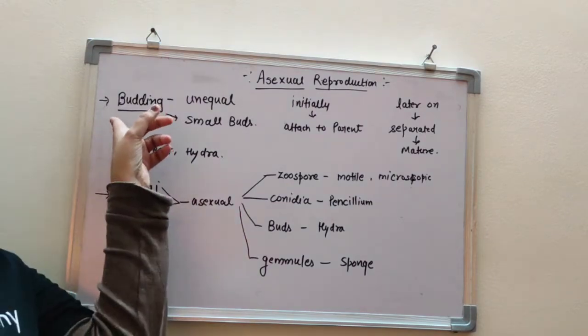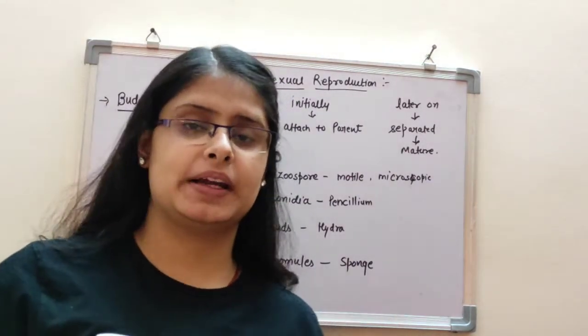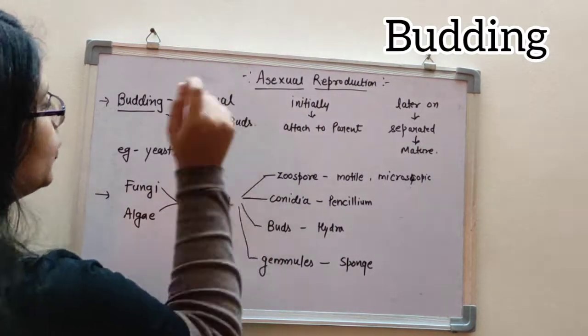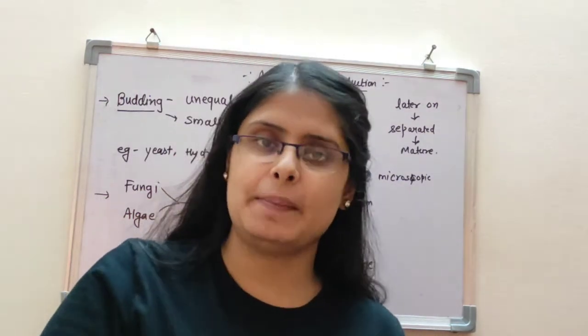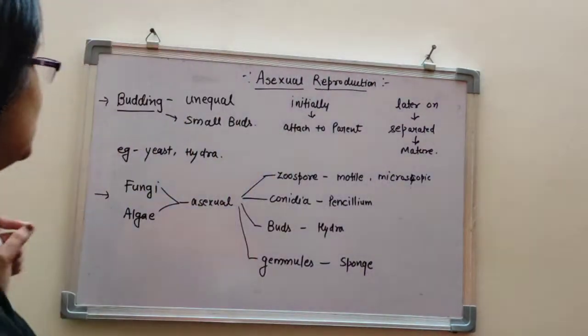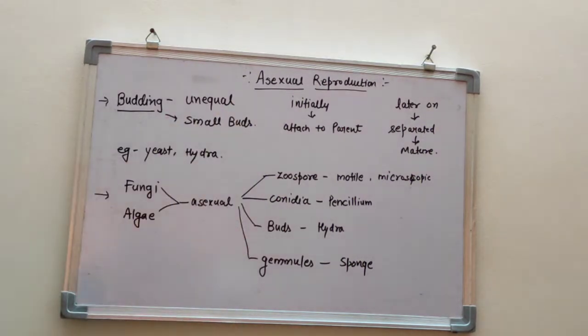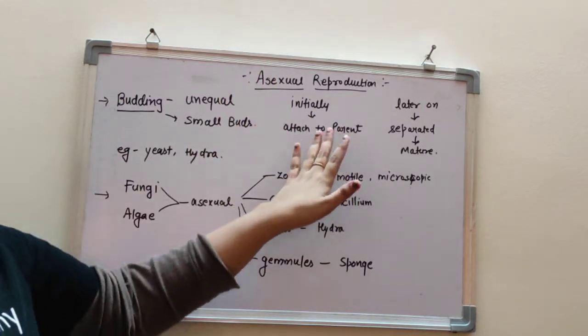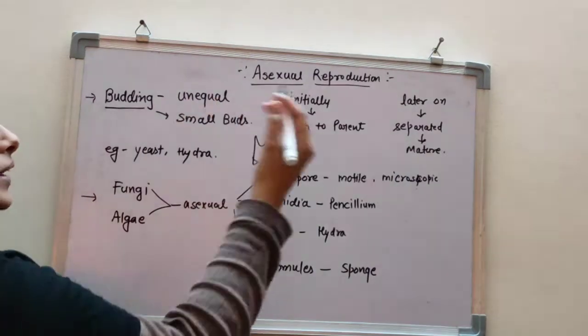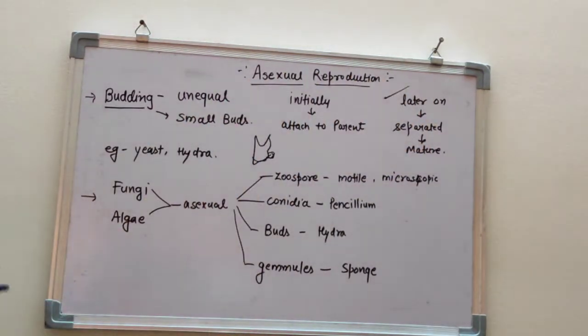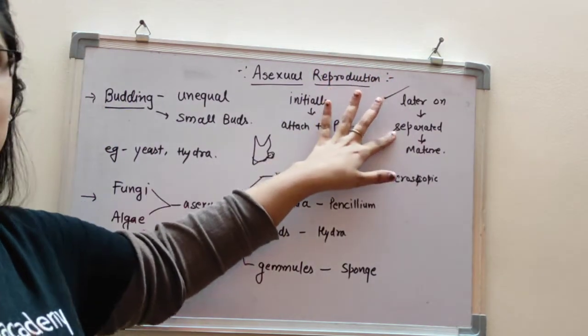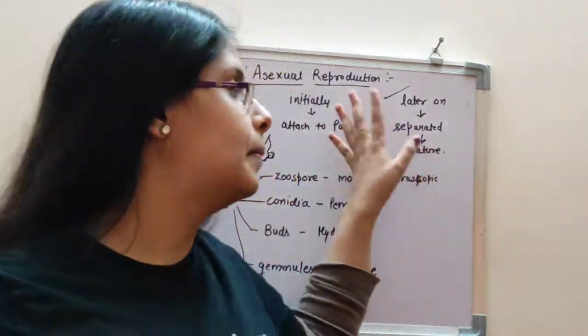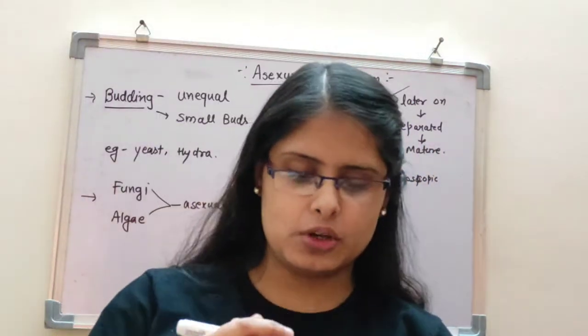Next, we will talk about budding. What happens in budding? It is an unequal division. In binary fission, it was two halves. When you study budding, it is unequal division. There are small buds. Initially, those buds are attached to your parent. But slowly, as they grow up, they are separated from their parent. When separated, they become mature.